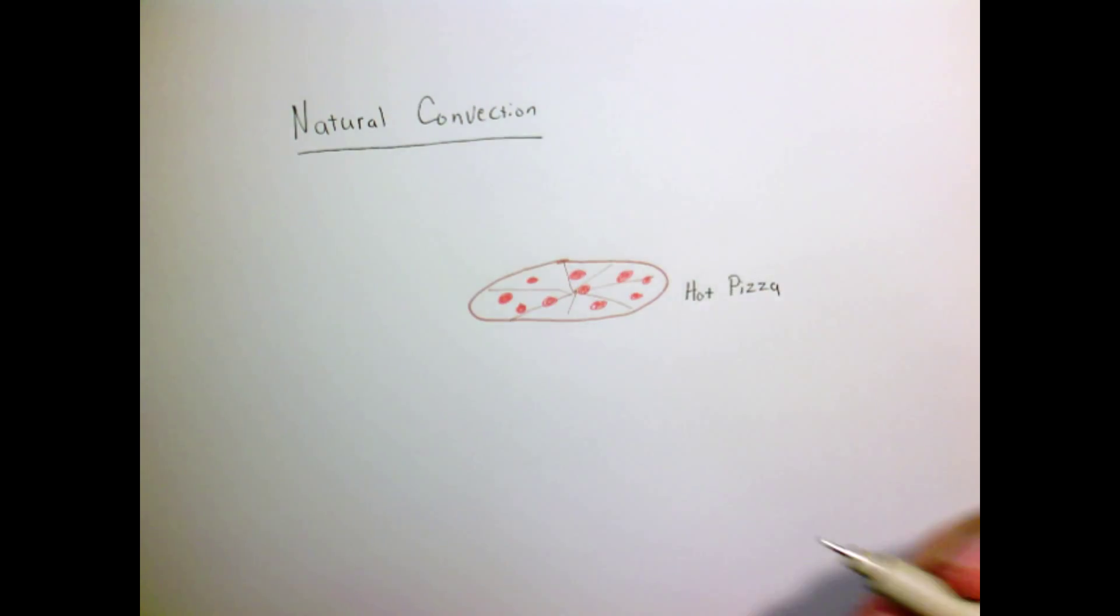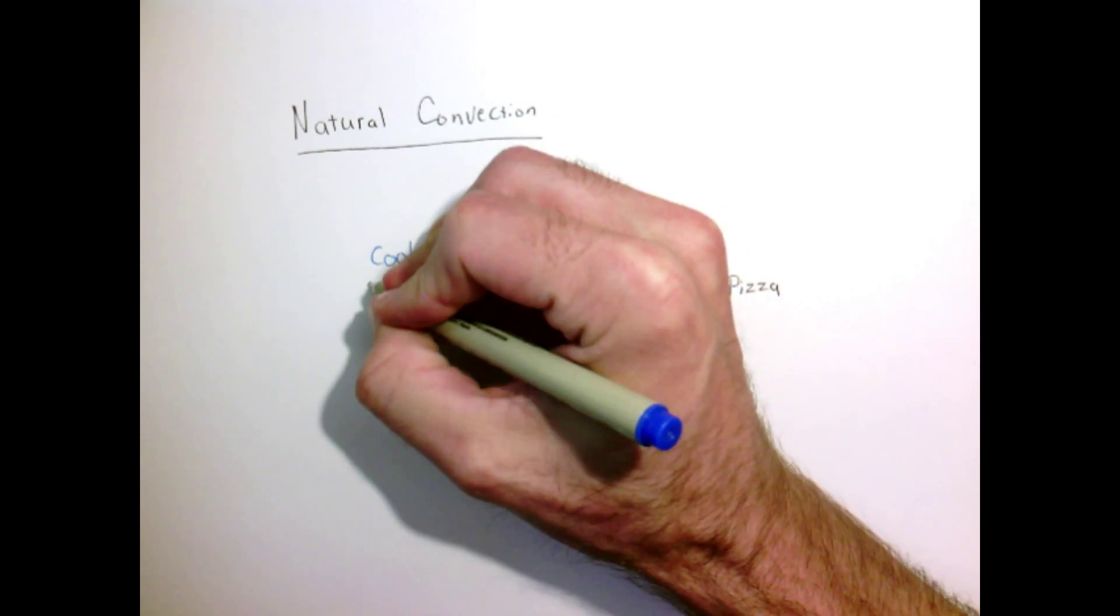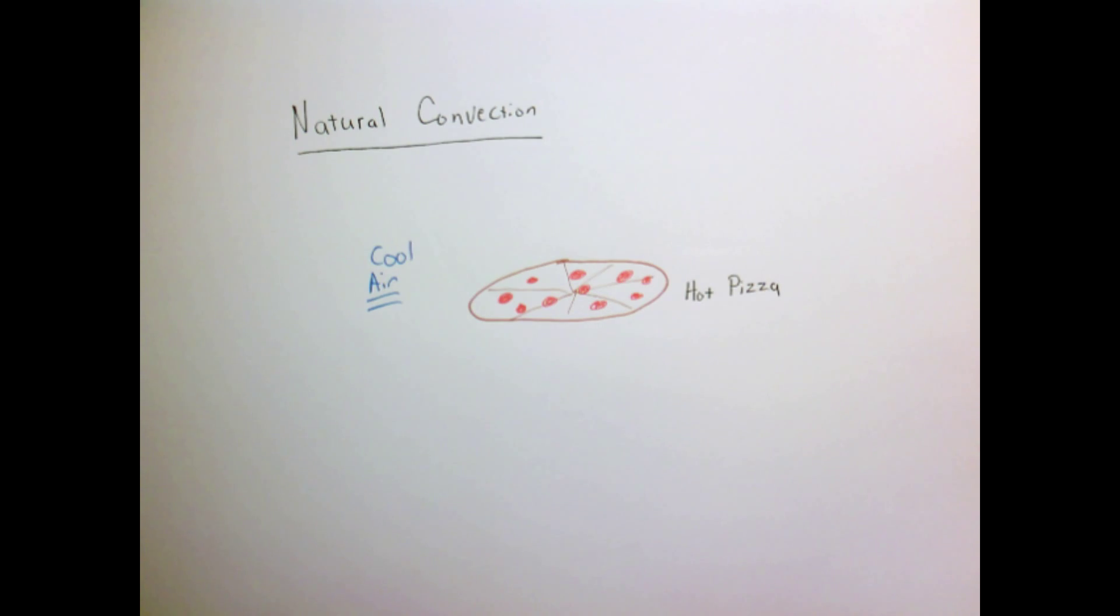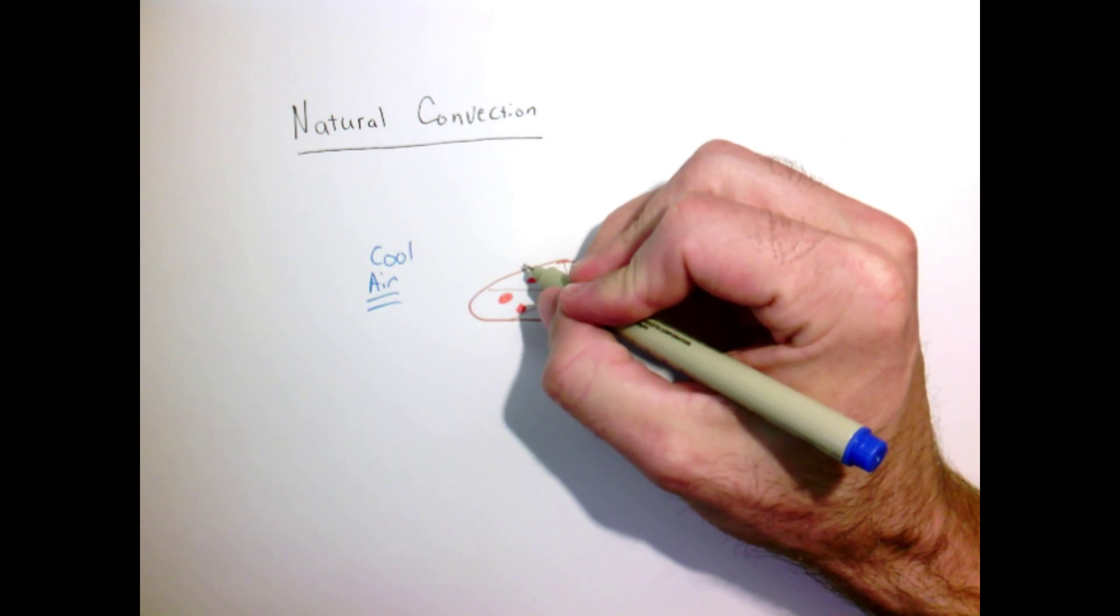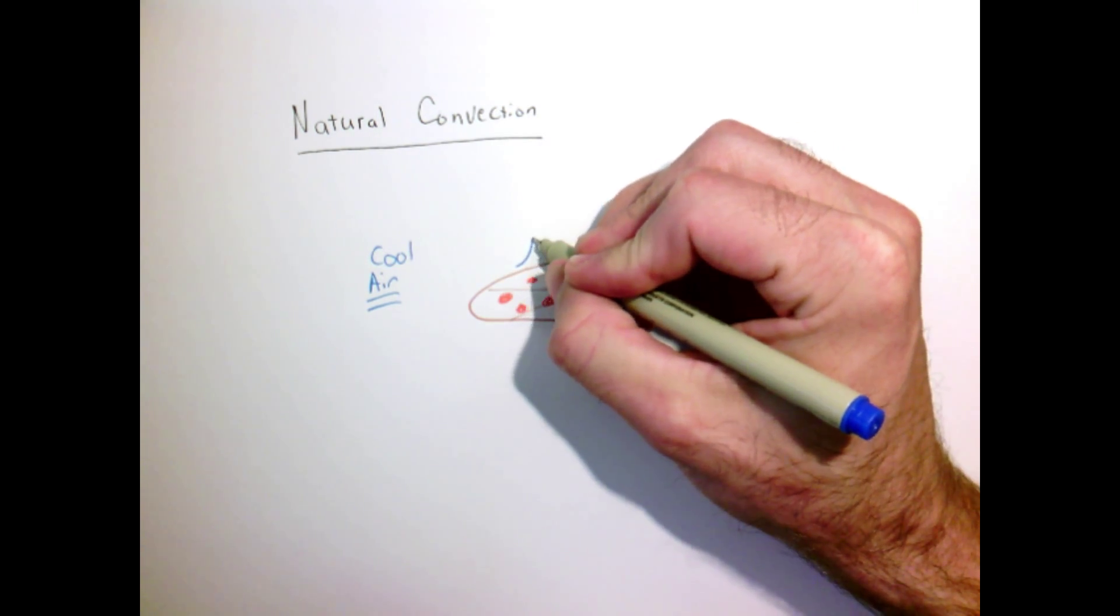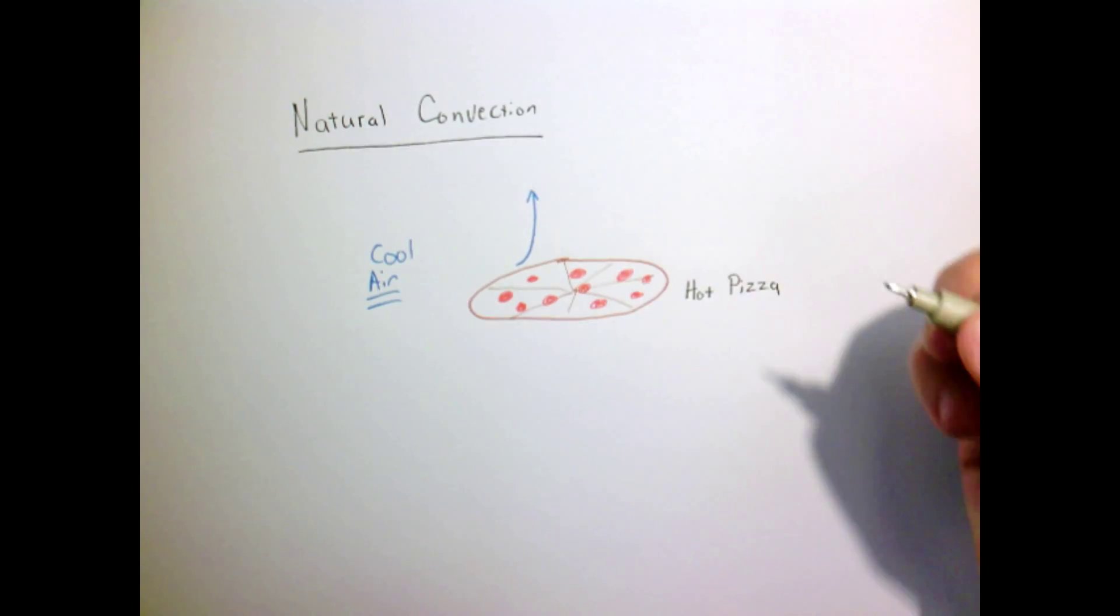Now we're in an environment that's relatively cool, so the air is cool around the pizza, and the air very close to the pizza is going to heat up. As it heats up, it's going to become lighter and tend to float and drift upwards.